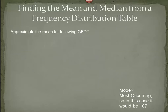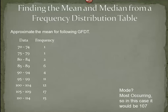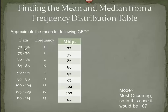Another type of situation where we may want to find the mean and the median is when we're given a frequency distribution table. For example, here's a frequency distribution table. Now, if I want to find the mode — which is the most occurring value — that mode would be 107. Because we don't have the actual data values themselves, the first thing we need to do is figure out what the midpoint is of each of these classes.